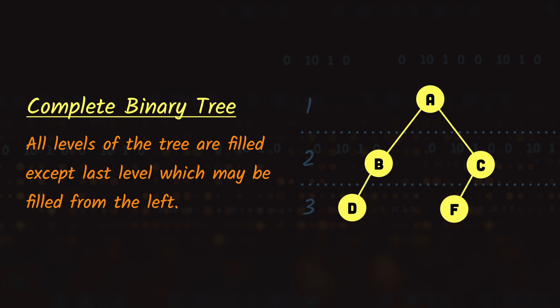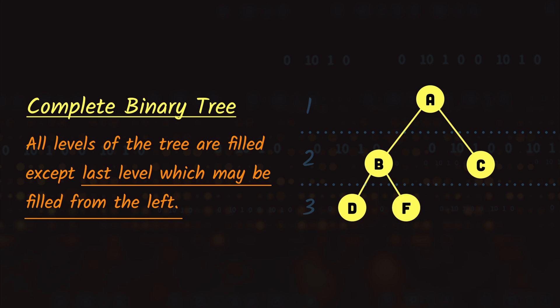Now let's say that we remove node E. In this case the tree is no longer a complete binary tree, since the condition requires all nodes on the last level to be on the far left side, and node F is not on the far left side. There are two ways to fix this: we can either move F under node B, or we can completely remove node F. In both cases the tree will be a complete binary tree.